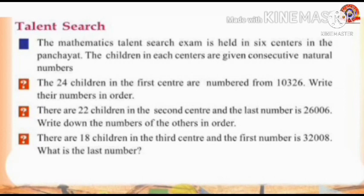First question: The 24 children in the first center are numbered from 10,326. Write their numbers in order. Here write 24 numbers continuously from 10,326. You should do this as an exercise in your math note.